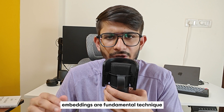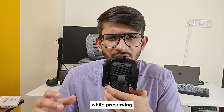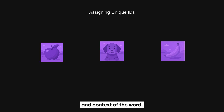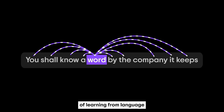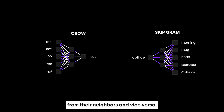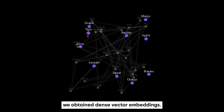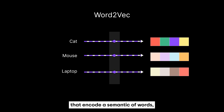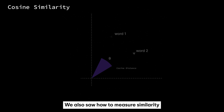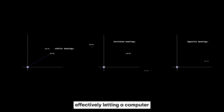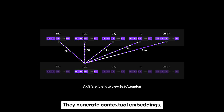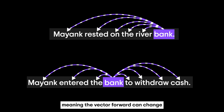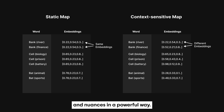To summarize: word embeddings are a fundamental technique that converts text into numbers while preserving meaning and context. We started with naive representations — IDs, one-hot vectors, bag of words — that were easy for computers but lost the essence of language. We then introduced context-based learning through Word2Vec, obtaining dense vector embeddings that encode word semantics. We saw how to measure similarity using cosine similarity. Modern large language models have taken embeddings further by generating contextual embeddings, where the vector for a word changes depending on the sentence, handling ambiguous words and nuances powerfully.